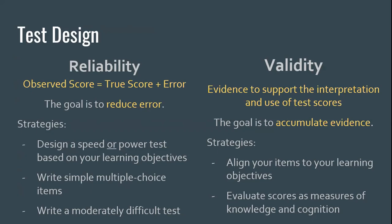To reduce error, write simple multiple choice items. Avoid complex multiple choice formats like 'A and B but not C,' 'all of the above,' or 'A, B, and C in this scenario but not D and E' — because once we get to that level of complexity, the cognition required for students to process it becomes more complex and time-consuming. We also want to aim to write a moderately difficult test.